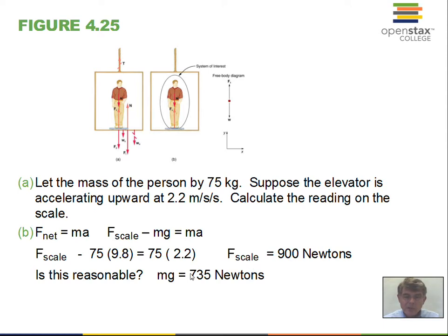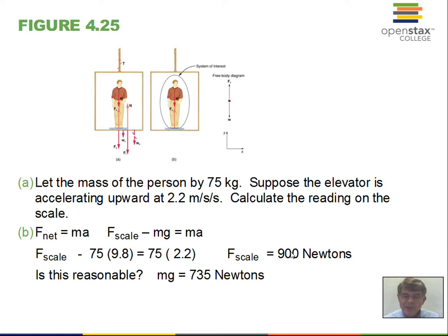Adding the numbers on both sides, we get 900 newtons. Is this reasonable? The weight of the person is 735 newtons, so 900 is reasonable for upward acceleration. The scale pushing upward has to do two things: support the weight of the person at 735 newtons, and also accelerate the mass of the person — that takes extra force. If the elevator were stationary, the scale would push up with exactly 735 newtons and there'd be zero net force. Because the elevator is accelerating upward, the scale must push with more than the weight.